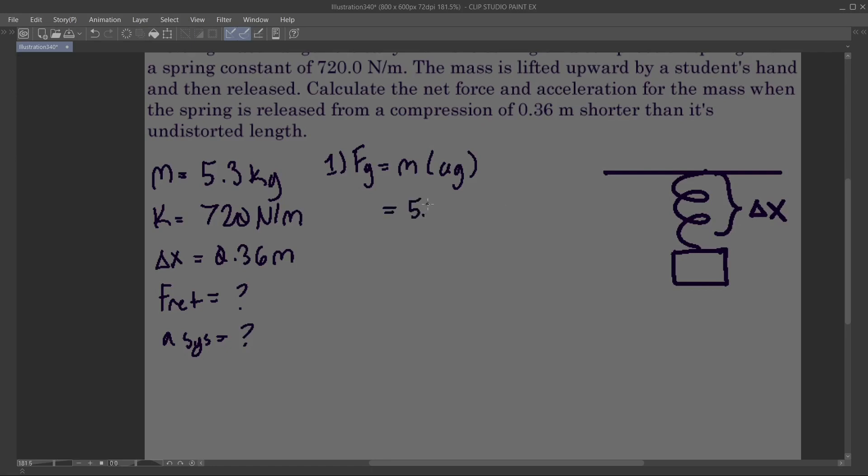We have 5.3 kg times negative 9.81 m per second squared, which is going to give us negative 51.993 newtons, which is approximately 51.99 newtons down.